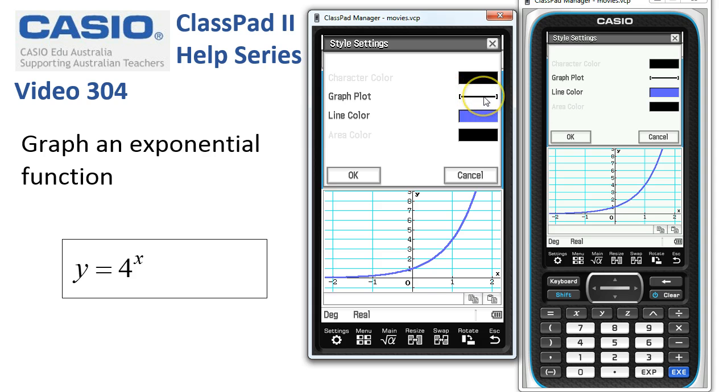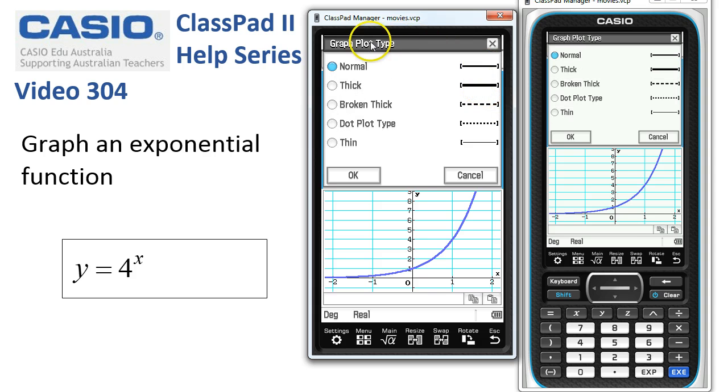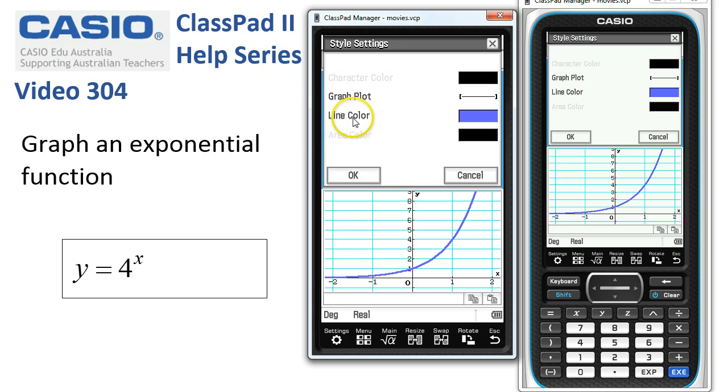Here are the graph plots, so by tapping onto this one it gives me the graph plot type normal at the moment. We can go thicker; I prefer thin on my handheld, so I'll say ok.